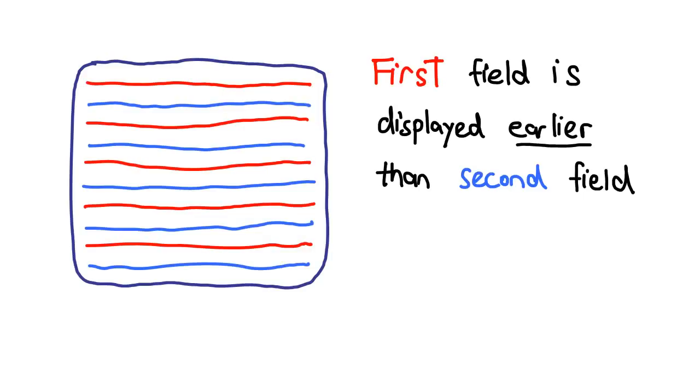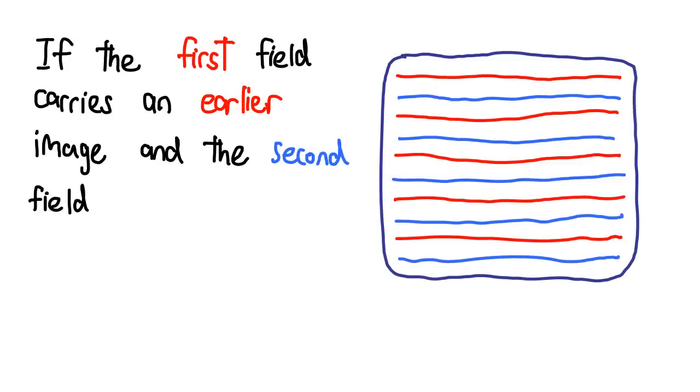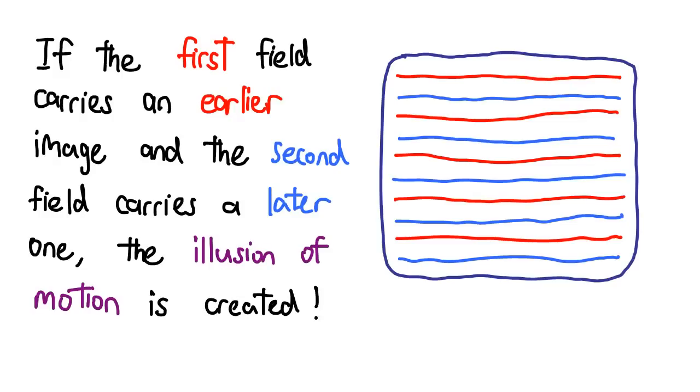Since interlacing meant that two fields were displayed at slightly offset time intervals, it was eventually decided that each field could carry imagery at slightly offset intervals. This means if we were to look at a single interlaced frame made by combining two fields, you'll notice that a strange lightning artifact is visible.